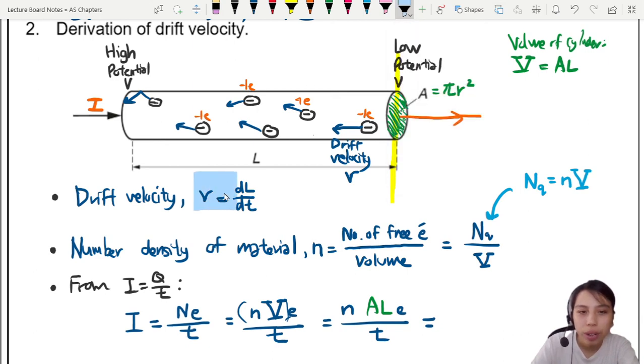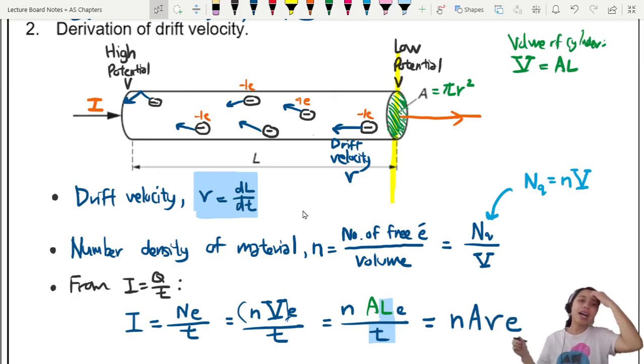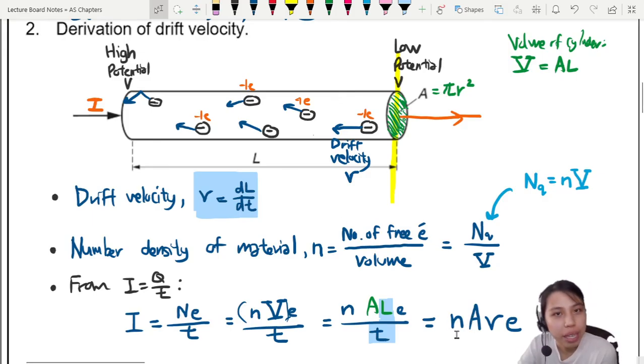So, remember drift velocity is dL/dt. Change in length, change in time. Or you could say L over T. So, we see that pattern right here. L over T. So we can say that's our drift velocity. So, we can say N A drift velocity and E. That will be how you can calculate the current based on the dimension, the material, the velocity, and the electron elementary charge.